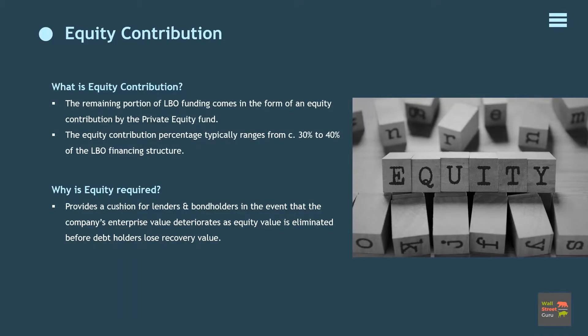The remaining portion of LBO funding comes in the form of an equity contribution by the private equity fund. The equity contribution percentage typically ranges from approximately 30% to 40% of the LBO financing structure. Although this may vary depending on debt market conditions, the equity contribution provides a cushion for lenders and bondholders in the event that the company's enterprise value deteriorates, as equity value is eliminated before debt holders lose recovery value.